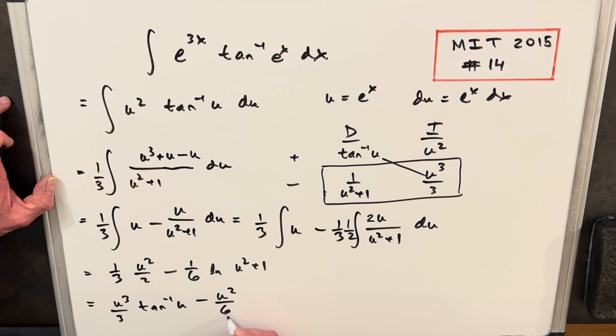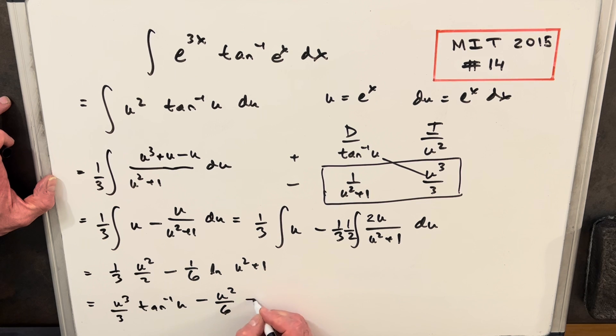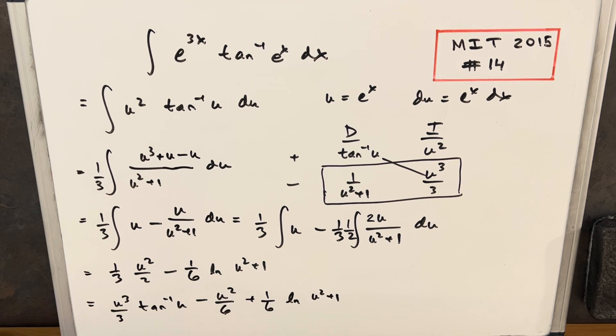Then we're going to distribute this minus here and we're going to have 1 sixth natural log u squared plus 1. By the way, I've left the absolute value off here just because it's always positive.